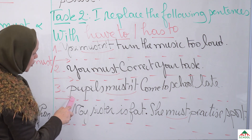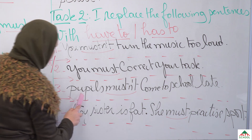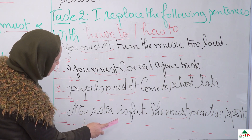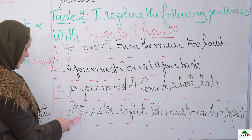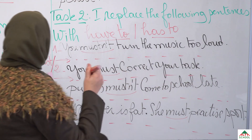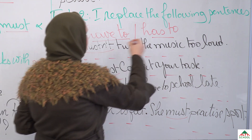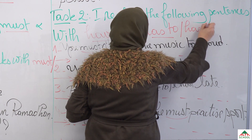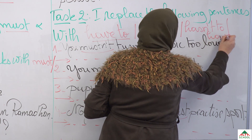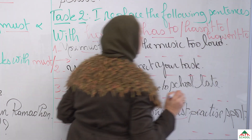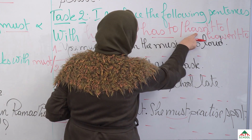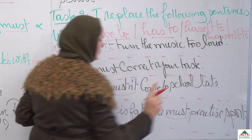Third: 'Pupils mustn't come to school late.' Fourth: 'My sister is fat. She must practice sport.' Here we have to use has to, hasn't to, or haven't to. We have to complete with have to, has to, hasn't to, or haven't to.